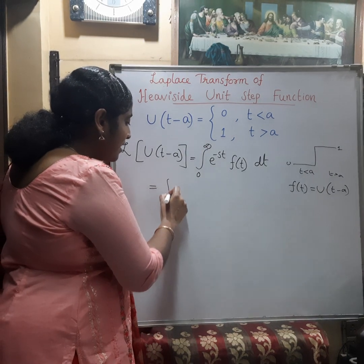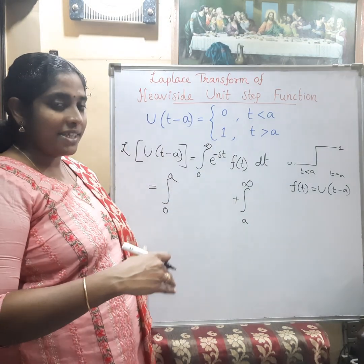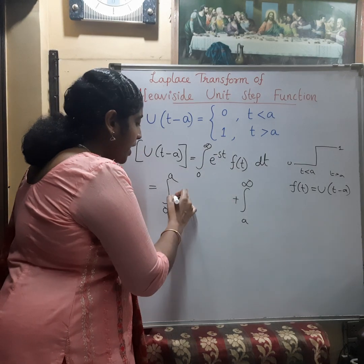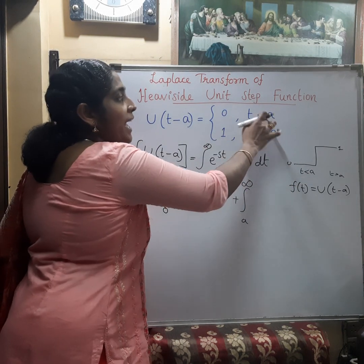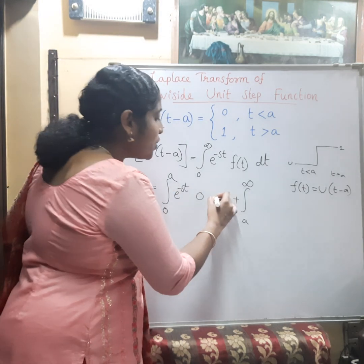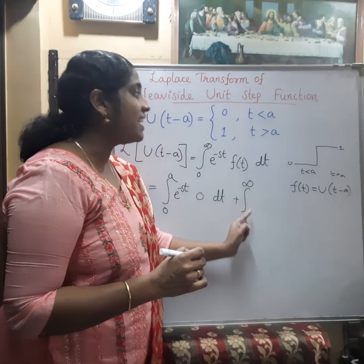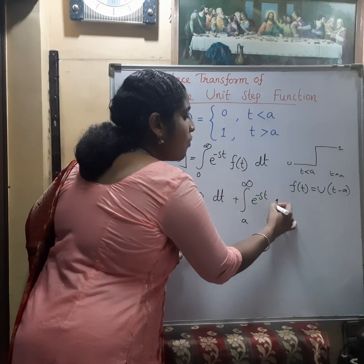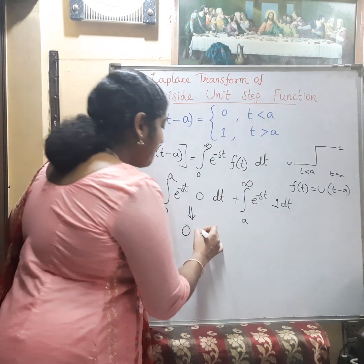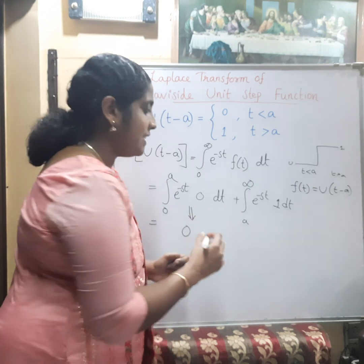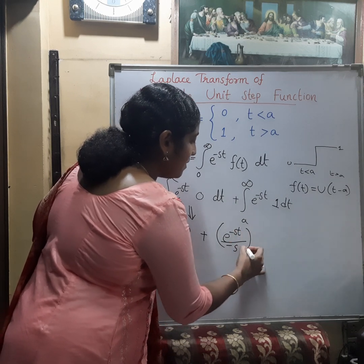We split the limit 0 to infinity as the integral from 0 to a and from a to infinity. From 0 to a, since t is less than a, u(t − a) equals 0, so that term is 0 dt. From a to infinity, since t is greater than a, u(t − a) equals 1, giving e^(−st) · 1 dt. This first part becomes completely 0, leaving the integral from a to infinity of e^(−st) dt. Integrating gives e^(−st) divided by (−s), evaluated from a to infinity.